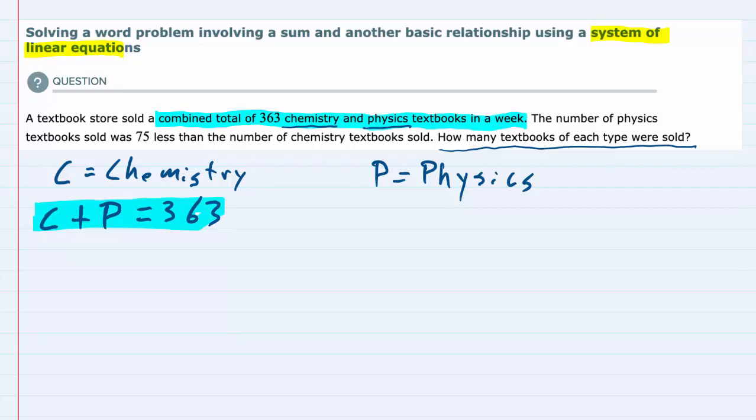And then reading the second sentence, the number of physics textbooks sold was 75 less than the number of chemistry textbooks sold. That's saying that the number of physics textbooks sold, P, was 75 less than the number of chemistry textbooks. So that's going to be the number of chemistry textbooks minus 75. So physics textbooks are 75 less than the number of chemistry textbooks. And that is our second equation.